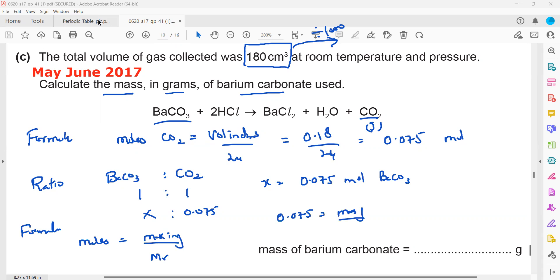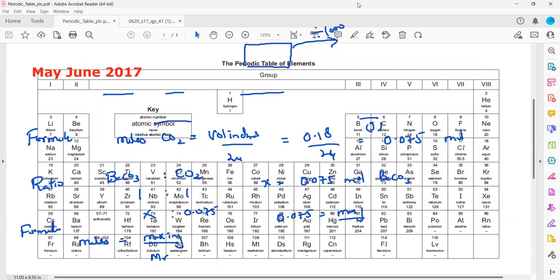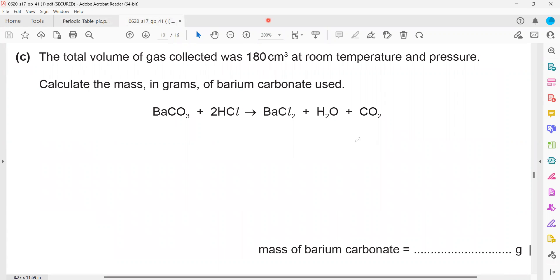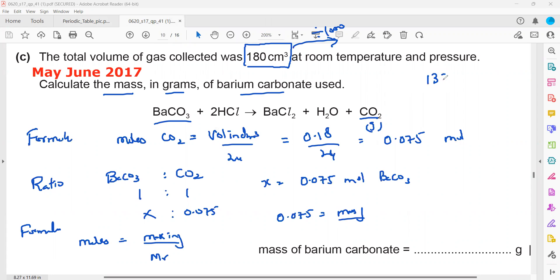For barium carbonate, what is the mass of barium in the periodic table? 137. What is the mass of carbon? 12. What is the mass of oxygen? 16. To get the molar mass of barium carbonate: barium is 137 plus carbon is 12 plus oxygen is 16 times 3, so 16 into 3 is 48, plus 12 is 60, plus 137 is 197.